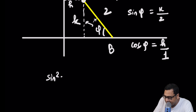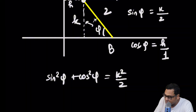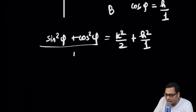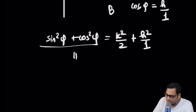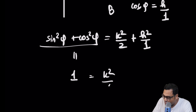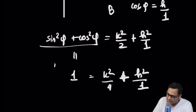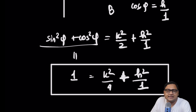Now we have sine phi equals k over 2 and cos phi equals h over 1. We can square and add: sine squared phi plus cos squared phi equals k squared over 4 plus h squared over 1. But sine squared phi plus cos squared phi equals 1. So we have k squared over 4 plus h squared over 1 equals 1. Just replace h and k by x and y and you get the final solution — the locus is an ellipse.